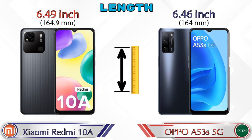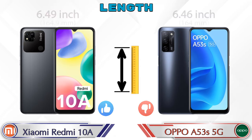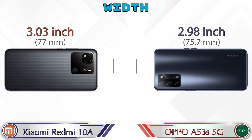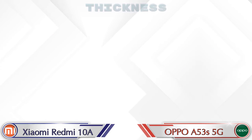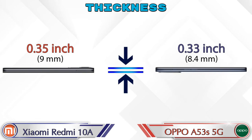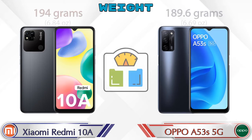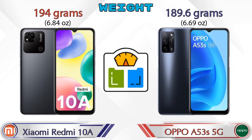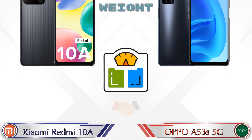Now let's check the details about dimensions. The length of Redmi 10A is 6.49 inches and A53s 5G is 6.46 inches. Width: Redmi 10A is 3.03 inches and A53s 5G is 2.98 inches, both less than Redmi 10A. Thickness: Redmi 10A is 0.35 inches and A53s 5G is 0.33 inches. Weight: Redmi 10A is 194 grams and A53s 5G is 189.6 grams, which are almost similar.